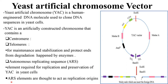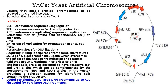ARS elements are thought to act as replication origins. In the case of YAC 3, it consists of 11,400 base pairs and has a SUP4 gene — a suppressor tRNA gene — which overcomes the effect of the ADE2 mutation and restores wild-type activity, resulting in colorless colonies. The host cells are designed to have defective TRP1 and URA3 alleles, which are complemented by the corresponding TRP1 and URA3 alleles in the vector, providing a selection system for identifying cells containing the YAC vector.